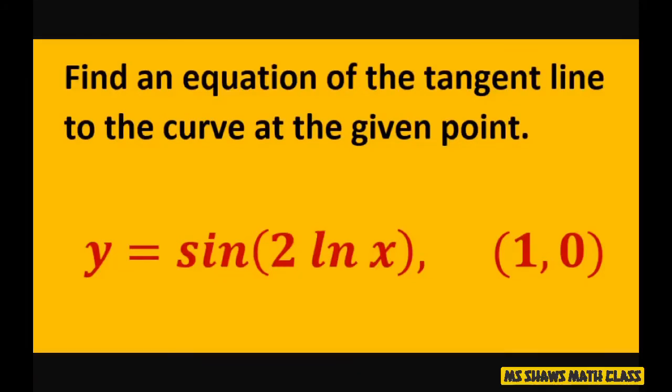Hi everyone. We're going to find an equation of the tangent line to the curve at the given point y equals sine of 2 ln of x and the point is 1 comma 0.